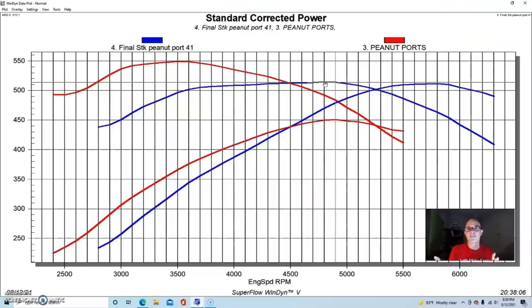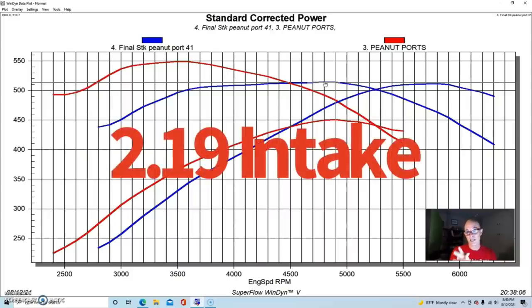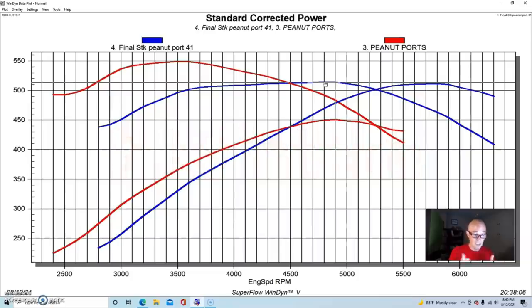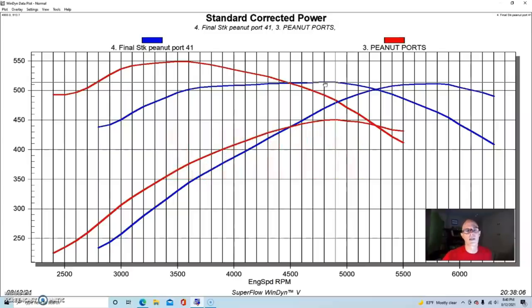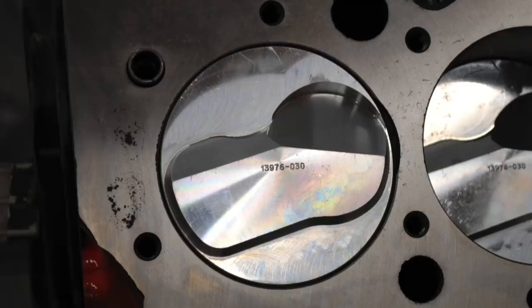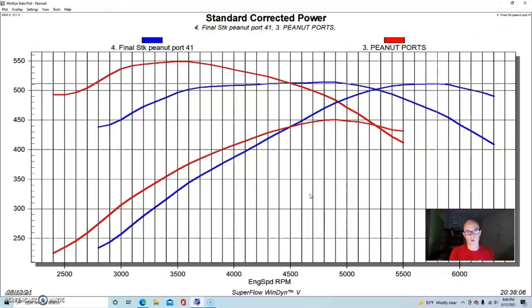The interesting thing here is it made over 500 horsepower with oval port heads, which we know is possible. There are lots of guys out there doing that. If you get a cylinder head that flows 250 to 260 or so with one of these things, and we also on these heads put a little bit bigger intake valve in the peanut port heads. We did upgrade the intake valve, we kept the exhaust valve the same. Obviously they had a good valve job and stuff on them, but this is what worked out with the peanut port head.